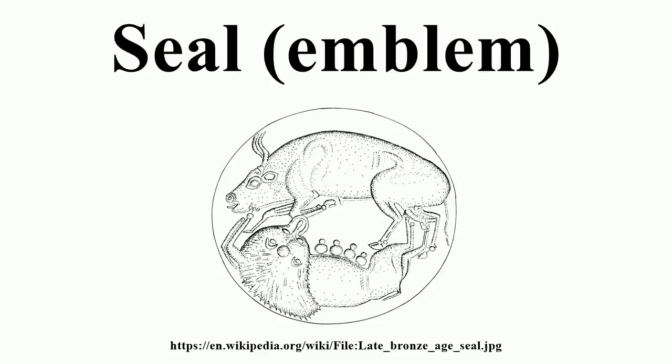A seal is a device for making an impression in wax, clay, paper, or some other medium, including an embossment on paper, and is also the impression thus made. The original purpose was to authenticate a document, a wrapper for one such as a modern envelope, or the cover of a container or package holding valuables or other objects. The seal-making device is also referred to as the seal matrix or die, the imprint it creates as the seal impression.